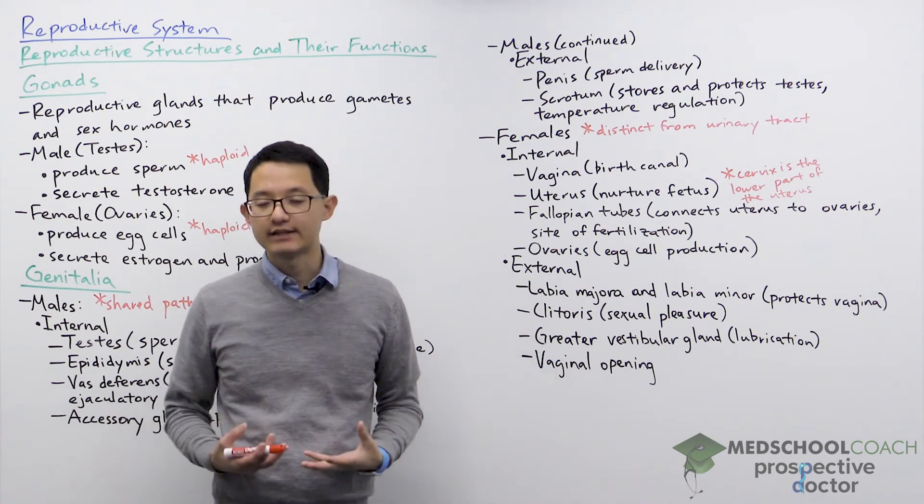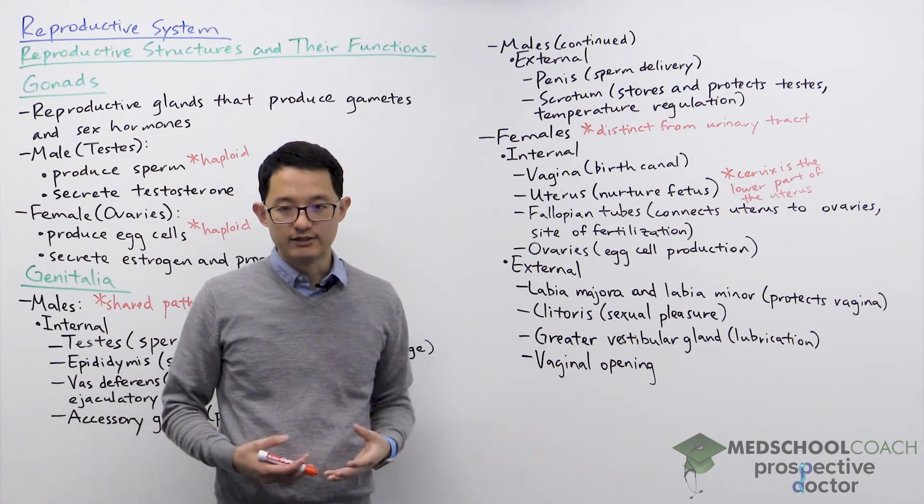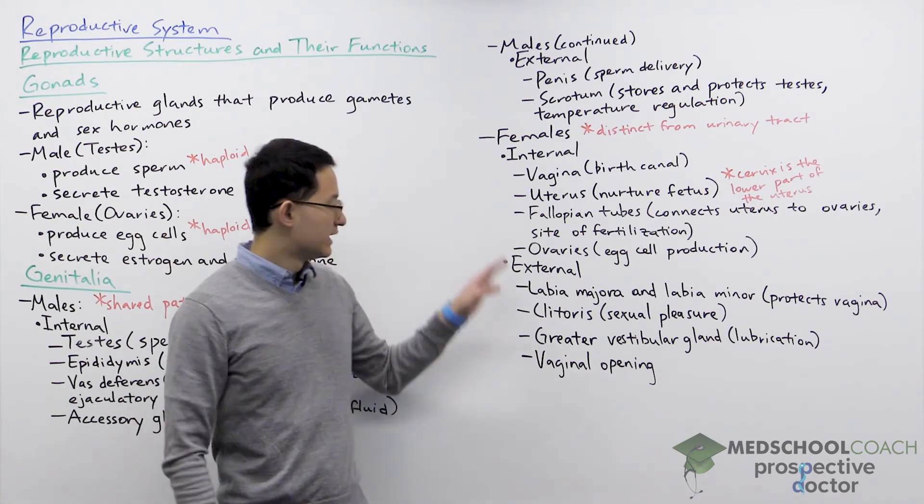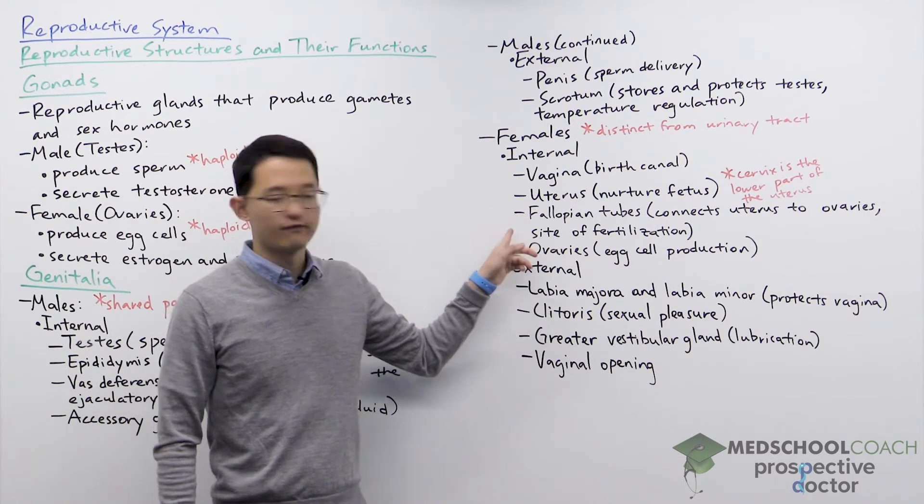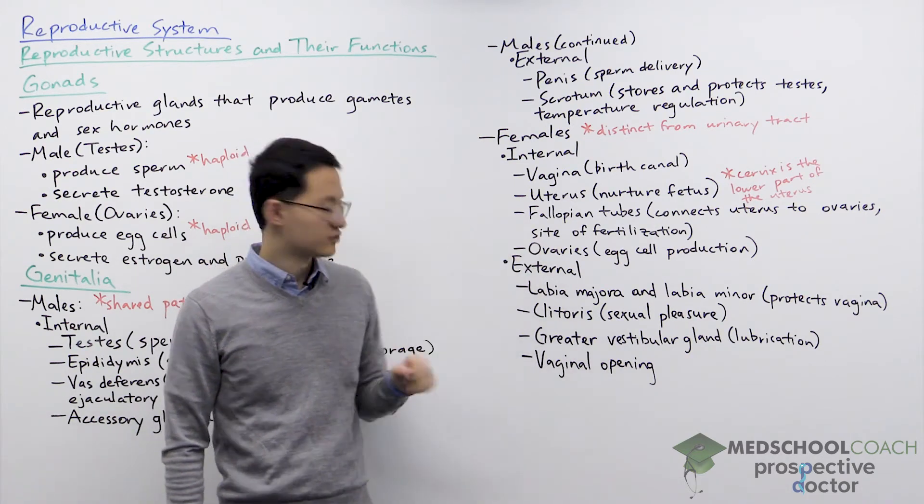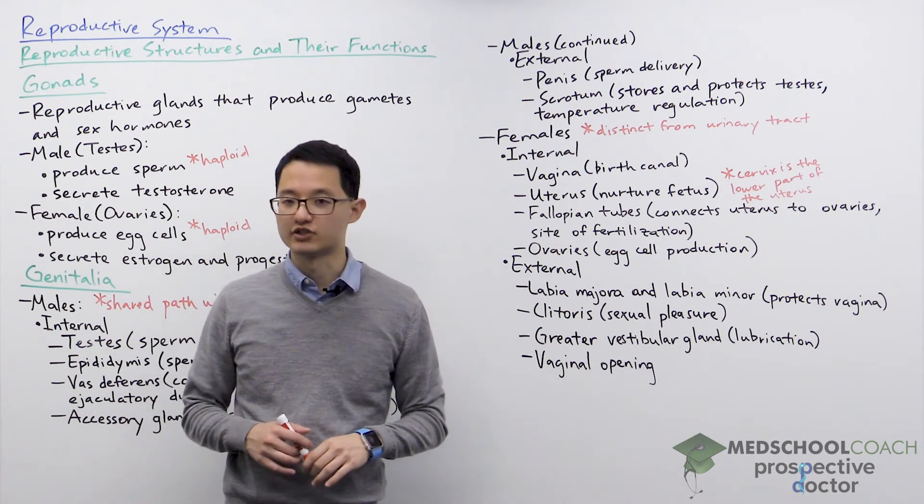During the monthly cycles, the menstrual cycle, follicles are released into the fallopian tubes and the sperm need to find their way to the fallopian tubes for fertilization to occur. So the fallopian tubes is important because it's the site of fertilization.